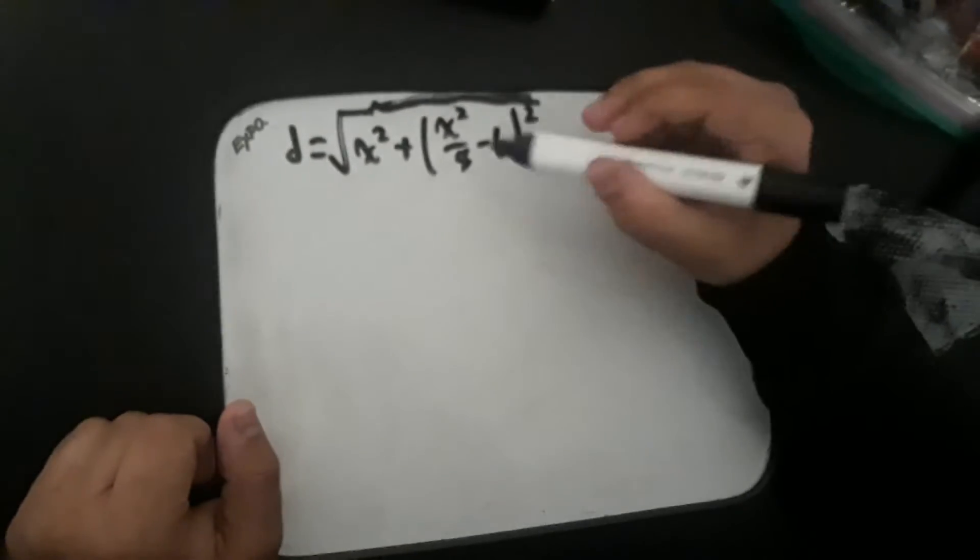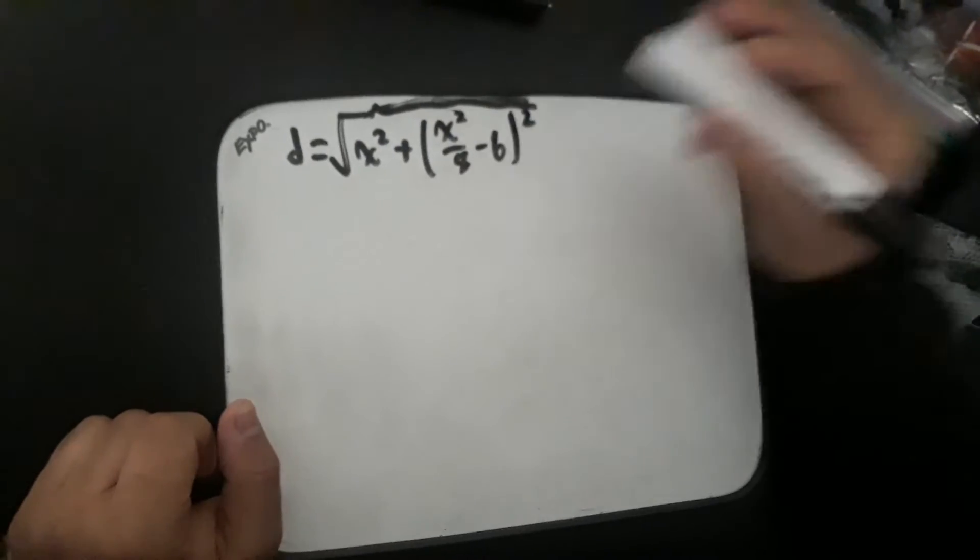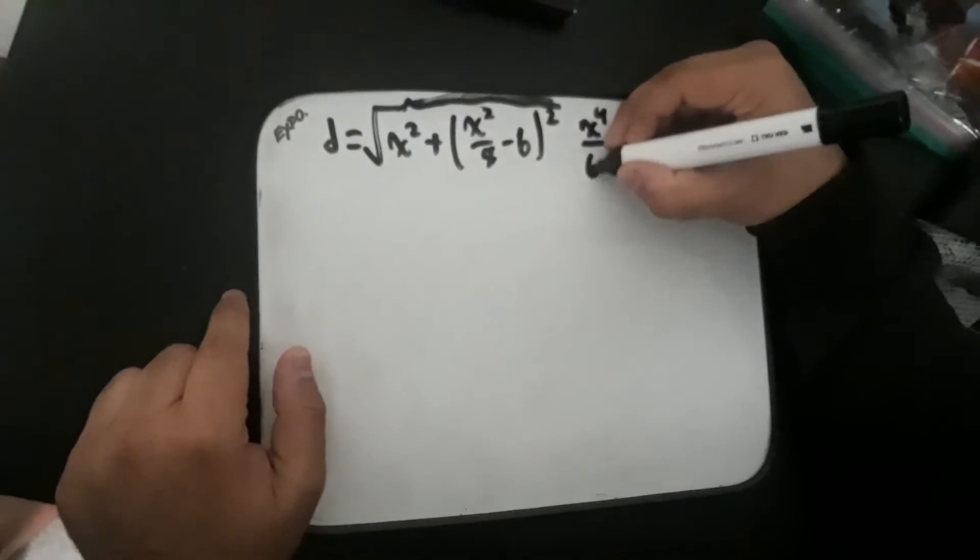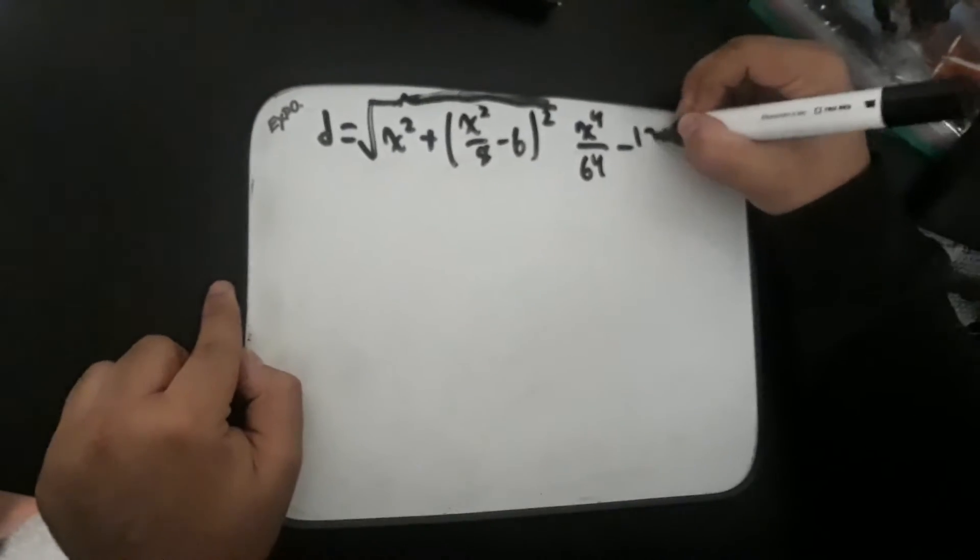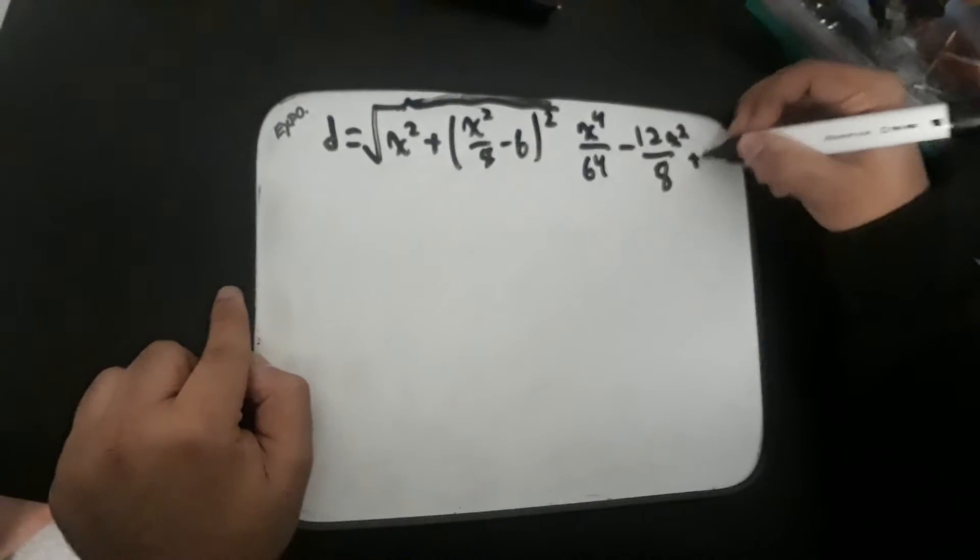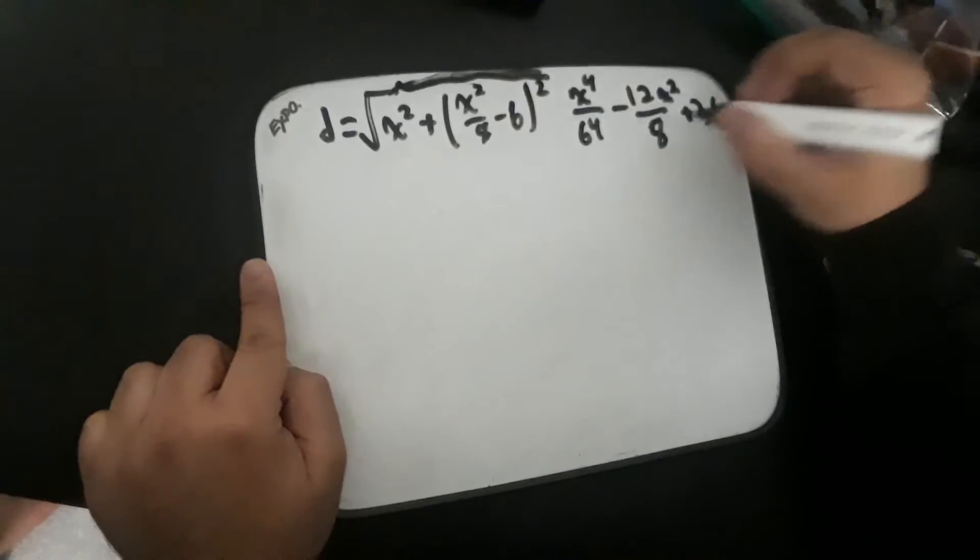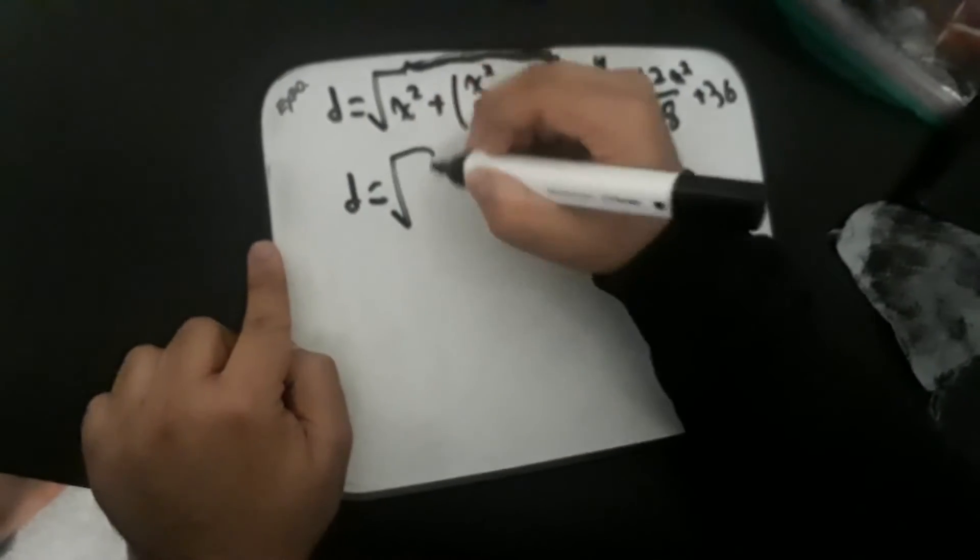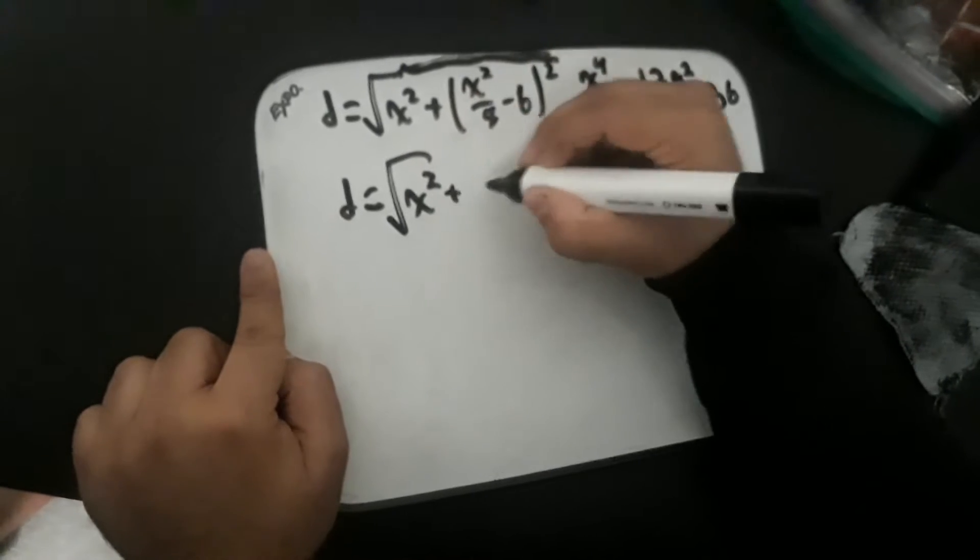The x squared over 8 minus 6 squared is a perfect square trinomial. So this can be expanded into x to the 4th over 64 minus 12x squared over 8 plus 36.